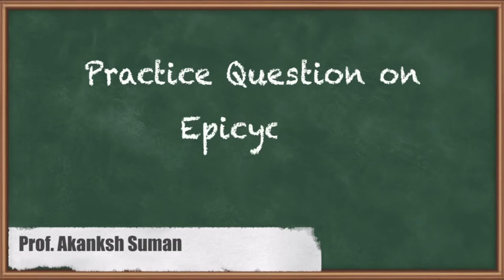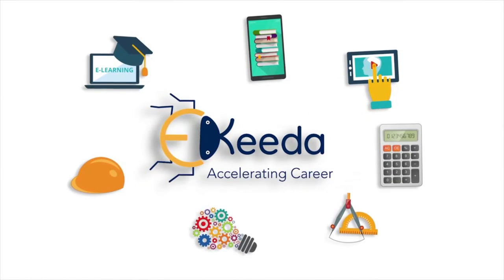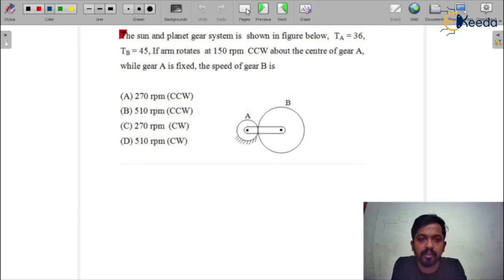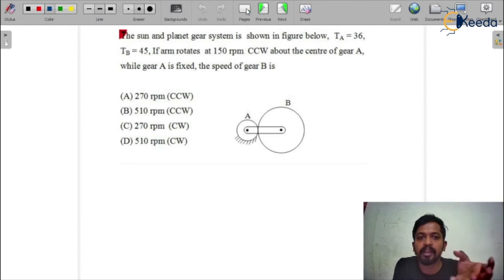Hello everyone, this is Akang Shuman. Now we will do questions based on the epicyclic gear train. We all know what an epicyclic gear train is — apart from the rotation of the gear, if any gear axis is rotating about some other gear axis, we call it an epicyclic gear train. For epicyclic gear trains, if you want to find out the degree of freedom, you can calculate it using the Kutzbach equations — you will get two degrees of freedom.